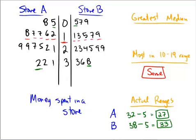For the median, we cancel out from top to bottom to find the value in the absolute middle. Canceling out values for store B from the top and bottom alternately, we're left with a leaf of 2 on the stem of 2, which indicates 22. So the median for store B is 22.